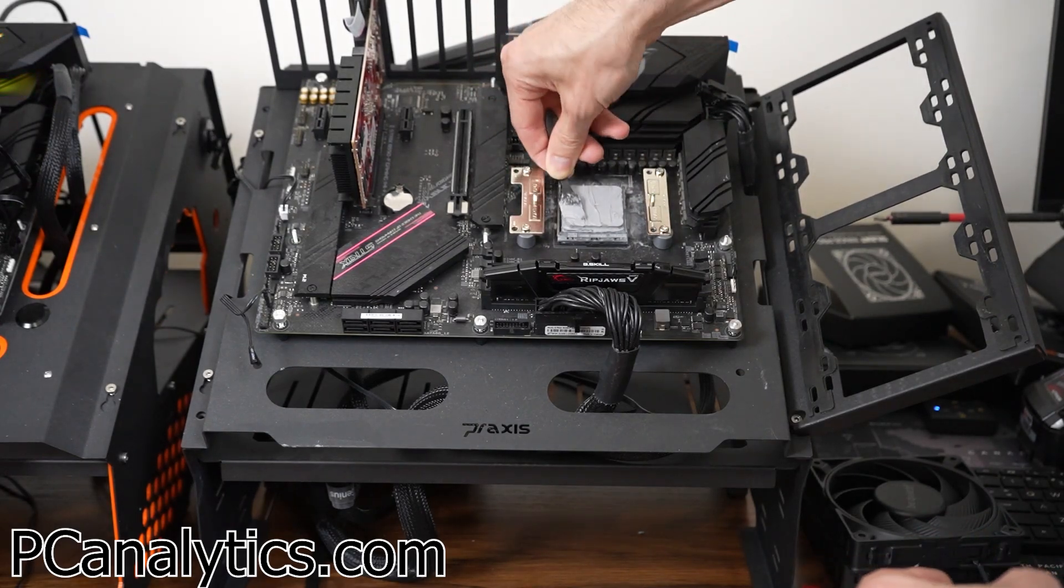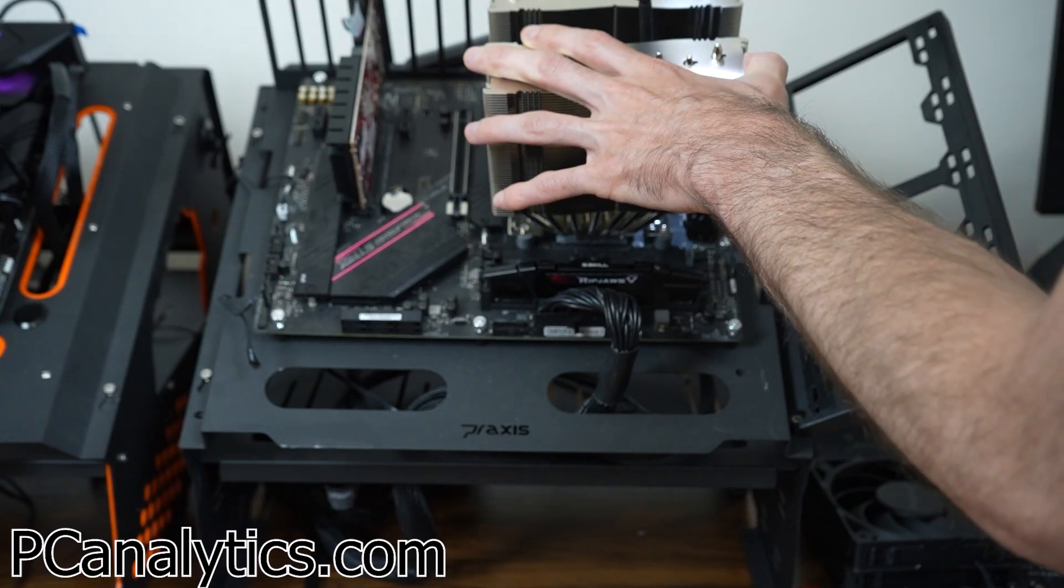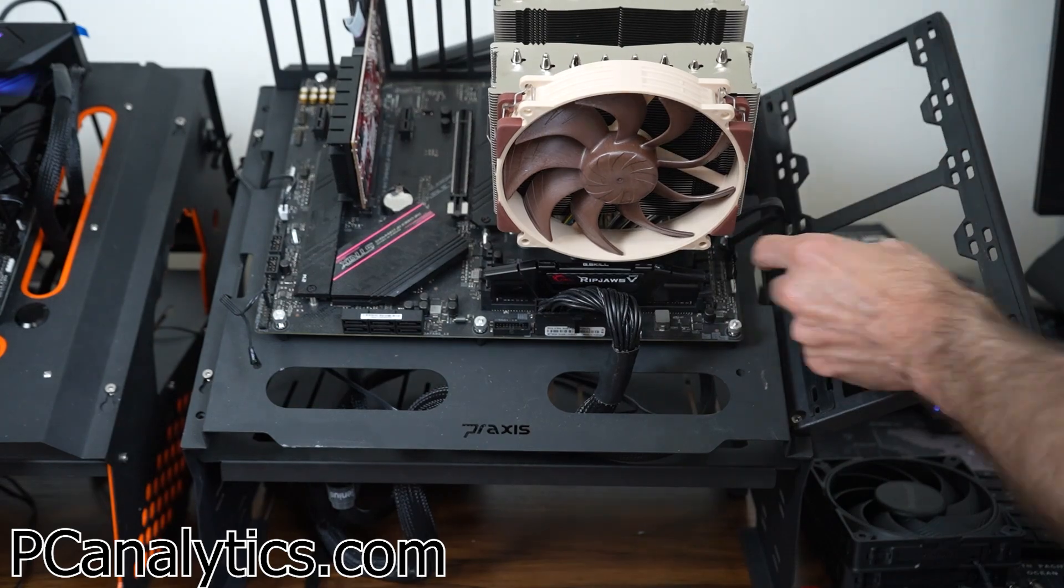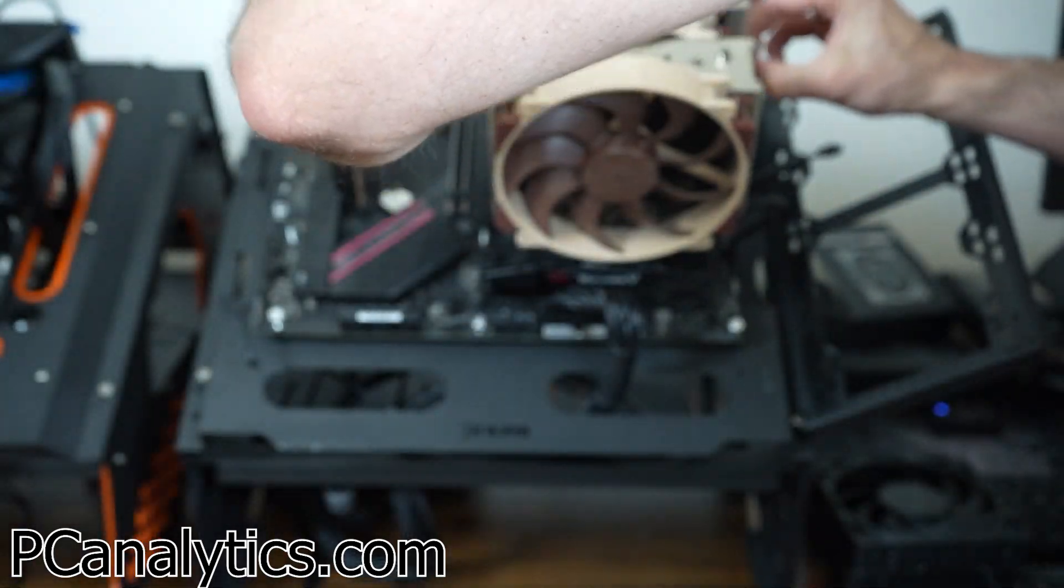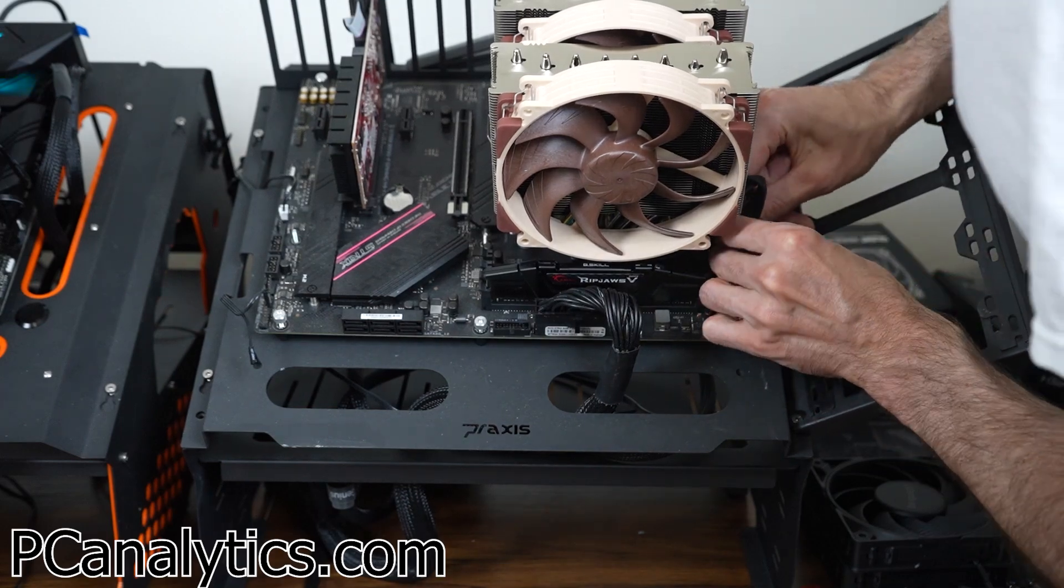Once the brackets are installed onto the motherboard, add thermal paste on the CPU and make sure that you have good coverage. Once the thermal paste is applied, now you want to secure the CPU cooler onto the brackets. Once the cooler is fully secured, now you can install the fans. I personally like having each fan connected to the motherboard independently, but you can easily use the Y connector so it only connects to the motherboard in one spot.